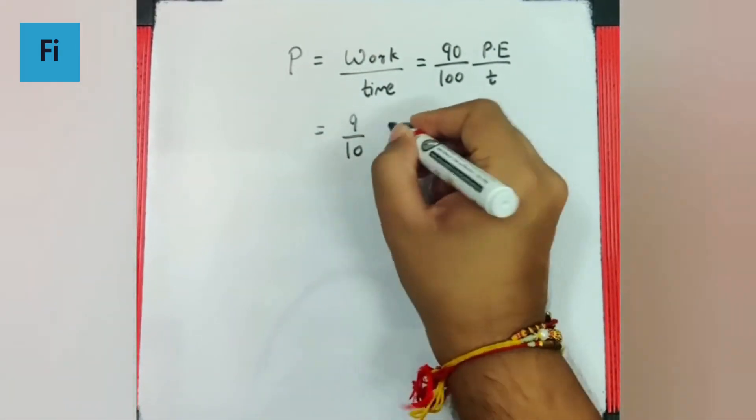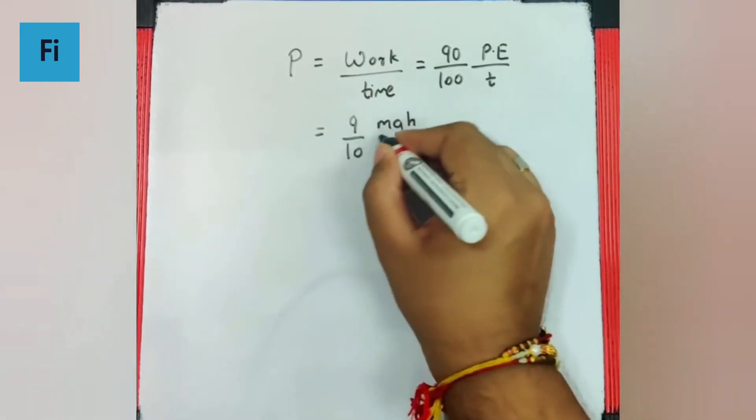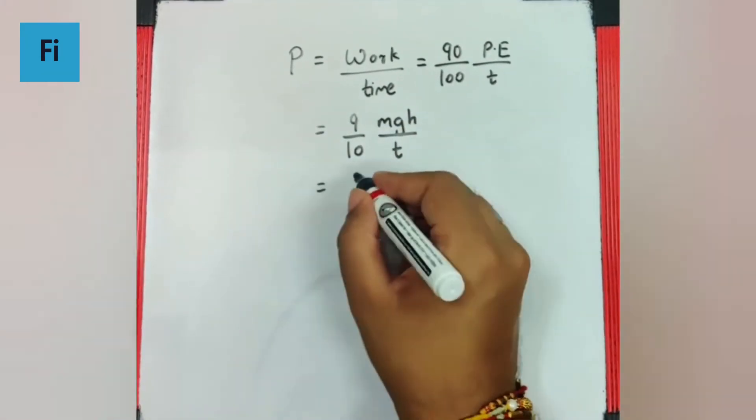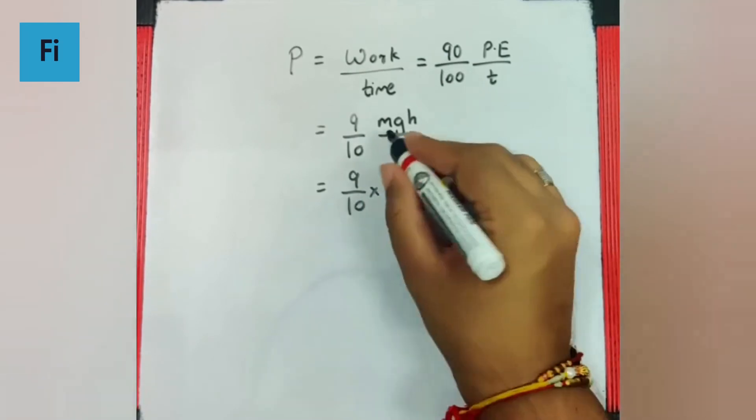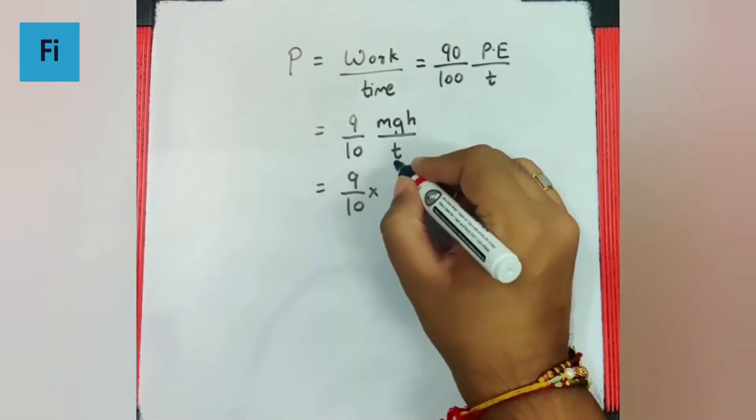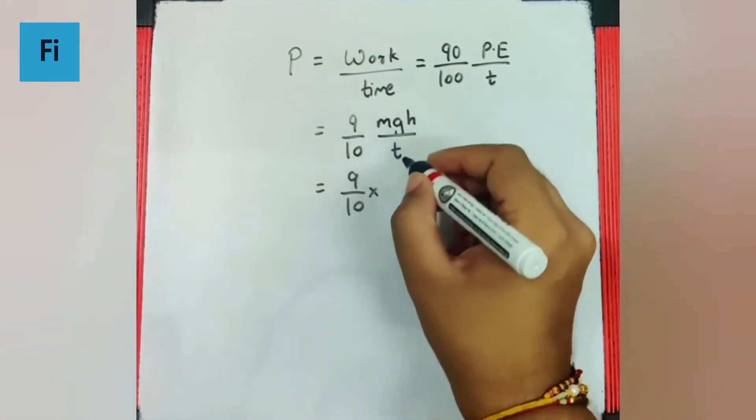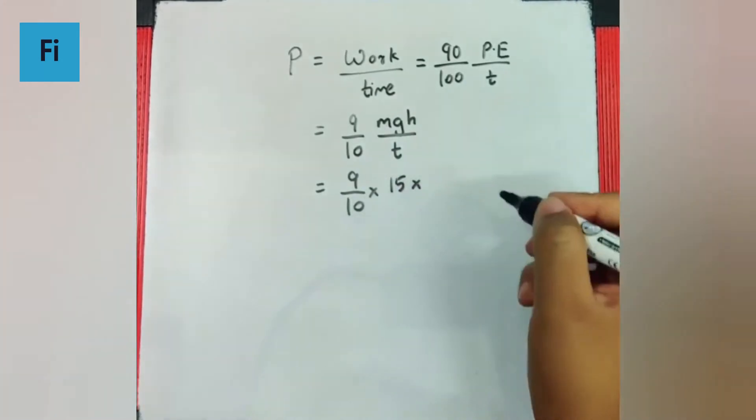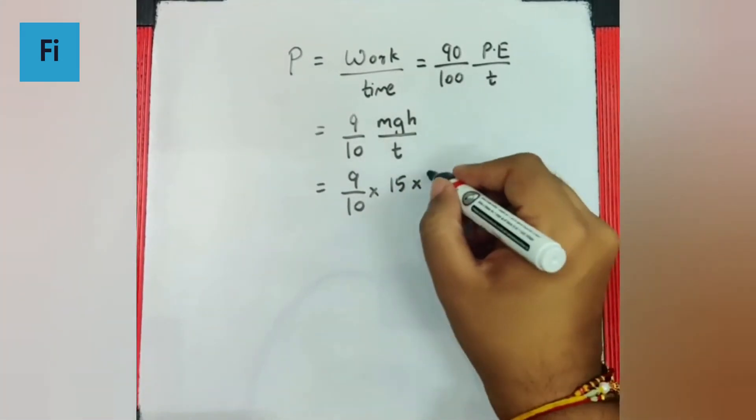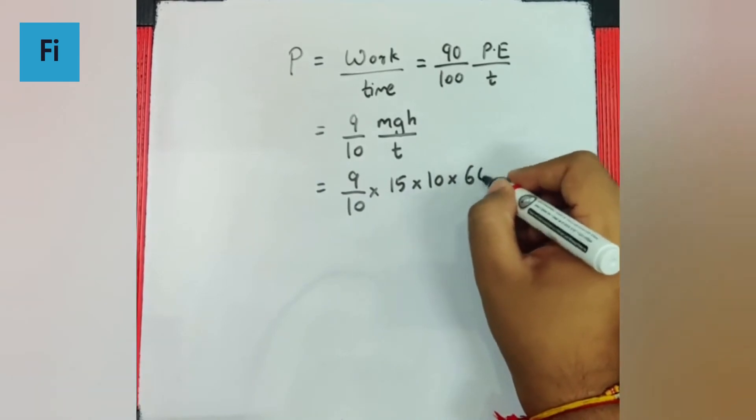That means it's 9 by 10 of MGH by T. Now that is 9 by 10 into mass upon time, that is the amount of water falling per unit time is 15 kg per second. I can assume g is 10 and the height given is 60 meter.